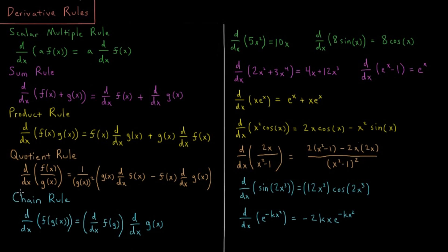Lastly, and helpful in many circumstances, is the chain rule. This is when we have the derivative of a function of another function: d/dx of f(g(x)). We first take the derivative of the outer function f evaluated at g, then multiply by the derivative of the inner function g(x). For example, d/dx of sine of 2x cubed: we take the derivative of sine, which is cosine, and keep everything on the inside the same — so cosine of 2x cubed.